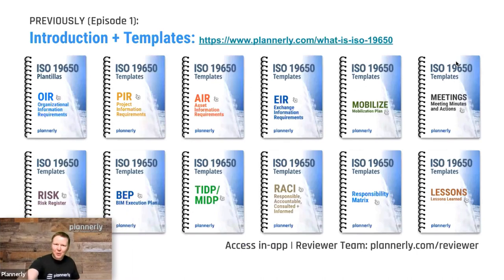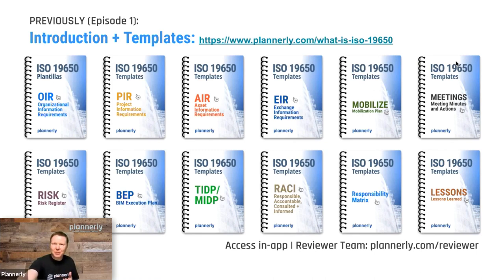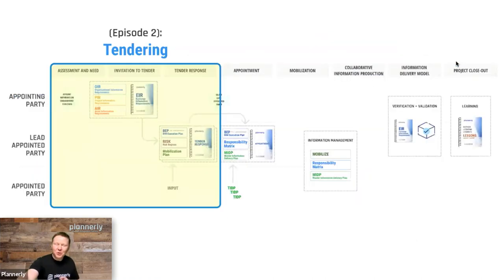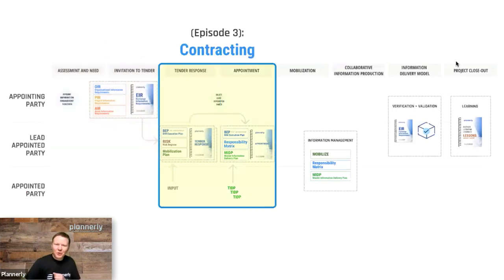The first episode that we looked at was about templates — there's a bunch of templates both in the plan and also in the scope. You'll find things like the AIR, which is the structured data in the scope, and things like the organizational information requirements templates in the plan. Those all combine in that tendering workflow. In episode two we talked about how you go through the tendering and tender response. Episode three we talked about contracting, so how you wrap that up into an e-signature.